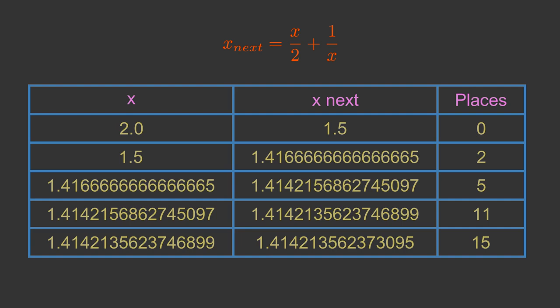For comparison, if we had used interval bisection to calculate the result, it would have taken about 50 iterations.